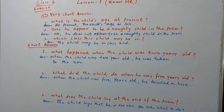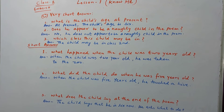Short answer. Question number 1: What happened when the child was 2 years old? Answer: When the child was 2 years old, he was taken to the zoo.